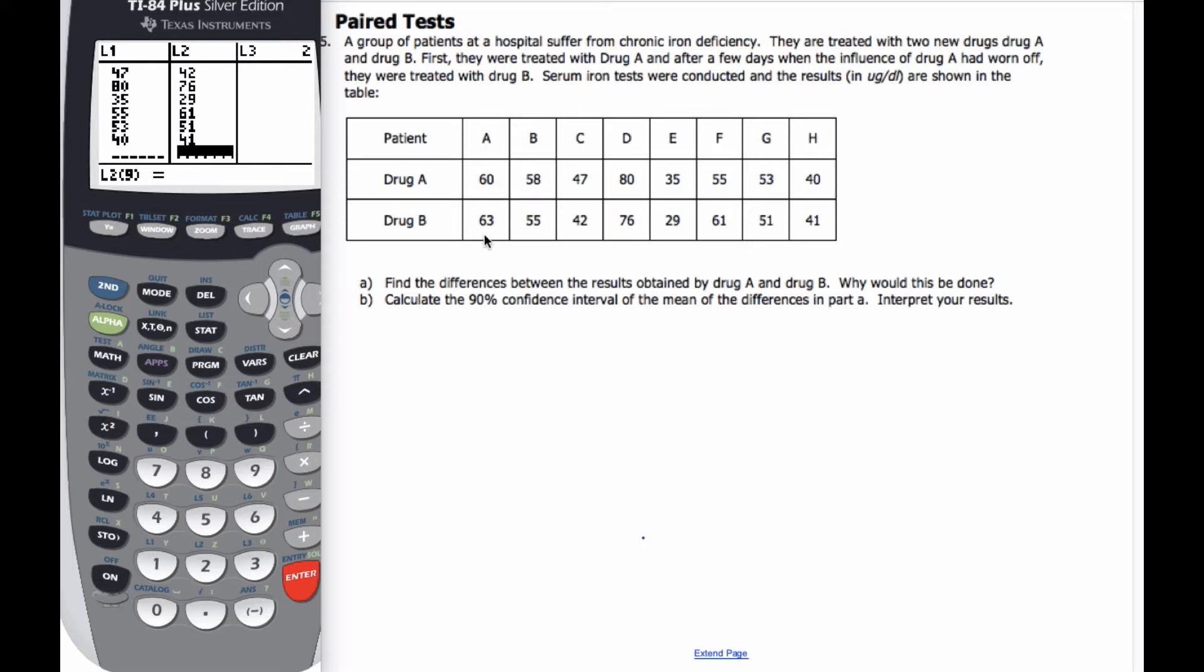And so here's patient A, and they have drug A. Here was the iron test results of whatever this unit means for each. Here's patient B has their results, and so on and so forth.